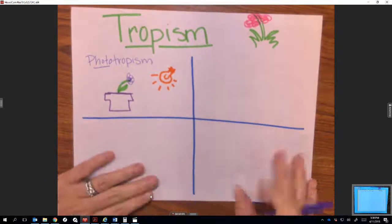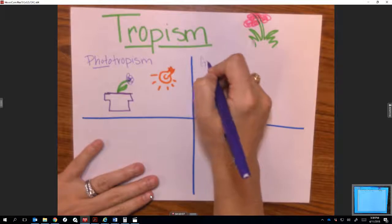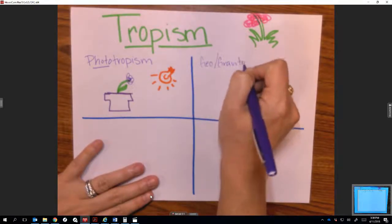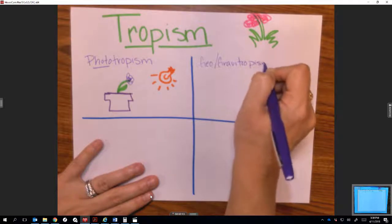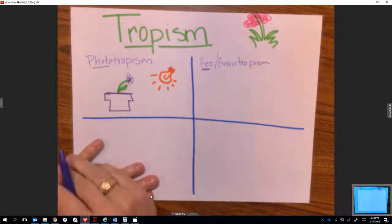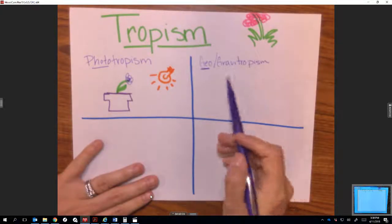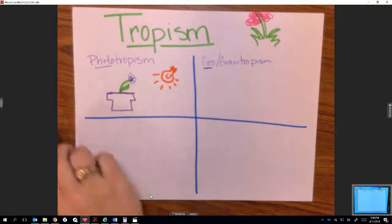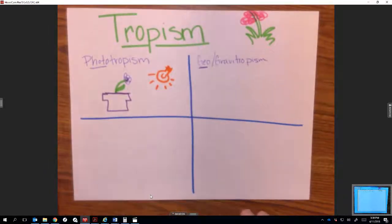Another tropism that we have discussed is geotropism or gravitropism. Geo meaning earth. When you talk about geology, that's the study of the earth. Gravitropism is pretty easy; it has to do with gravity. The hard part about gravitropism is that we're talking about roots as well as the stem.